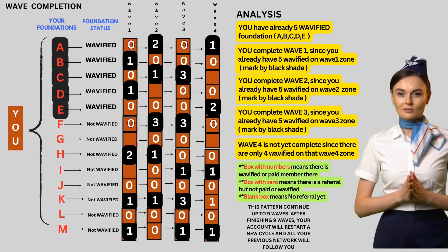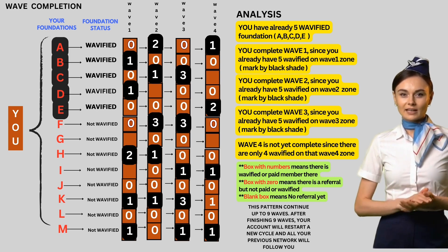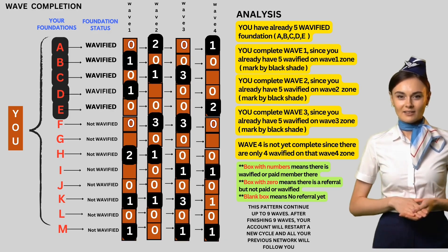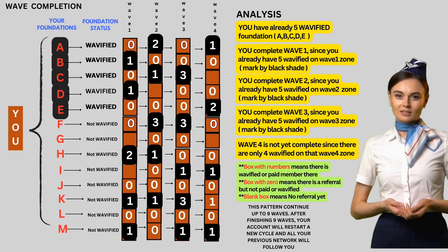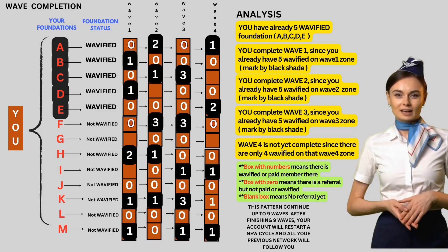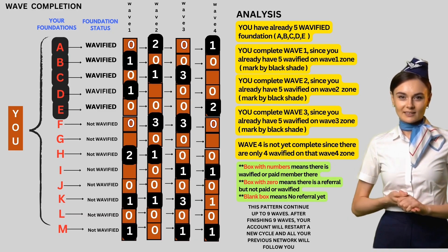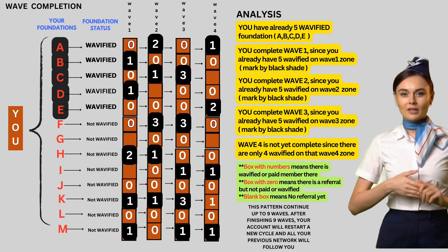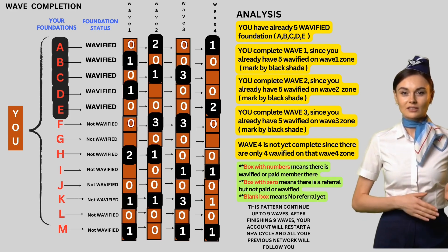Paano naman mabubuo ang wave three, wave four, wave five hanggang wave nine? Kagaya din ang pattern ng pagkabuo ng wave one at wave two — ganoon din ma-fill in ang kabuoan ng wave system hanggang nine waves. Makikita sa illustration na kahit tig-isa lang ang pumasok sa wave zone at kahit saan pa siya nagmula, basta limang tao sa wave zone na yun, tsak — buo na ang wave. Huwag kalilimutan na sa bawat wave na mabuo mo ay may 250 pesos kang bonus.